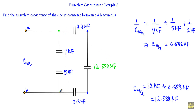Now, looking at the next terminals, we have three capacitors — 0.4 µF, 12.588 µF, and 0.8 µF — connected in series. Separately, 7 µF and 5 µF are also connected in series. I can replace each of these groups with their respective equivalent capacitances.